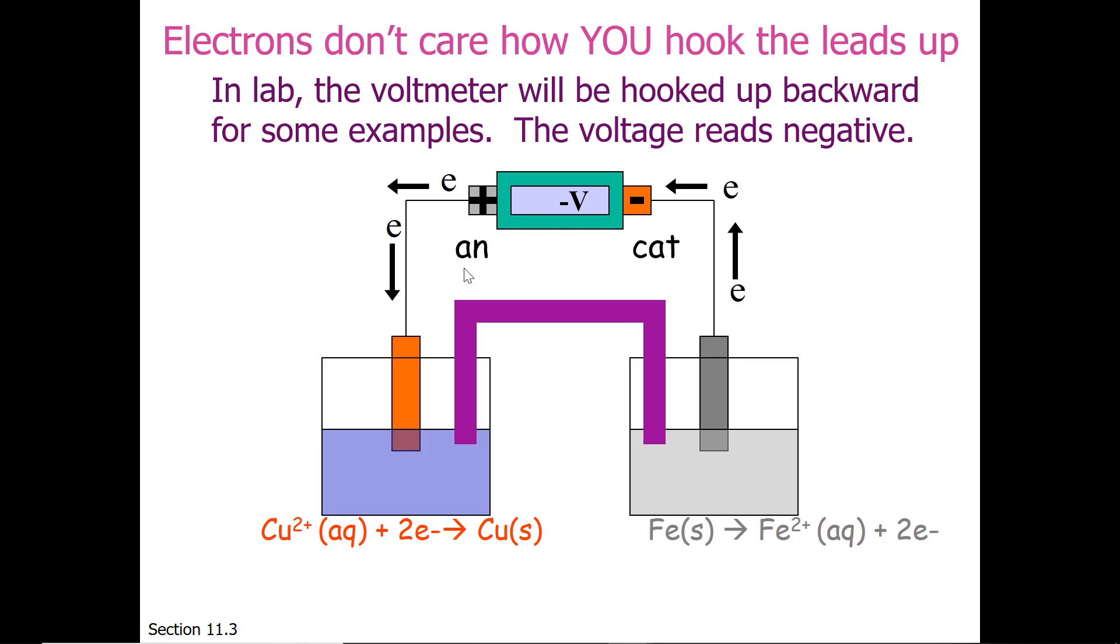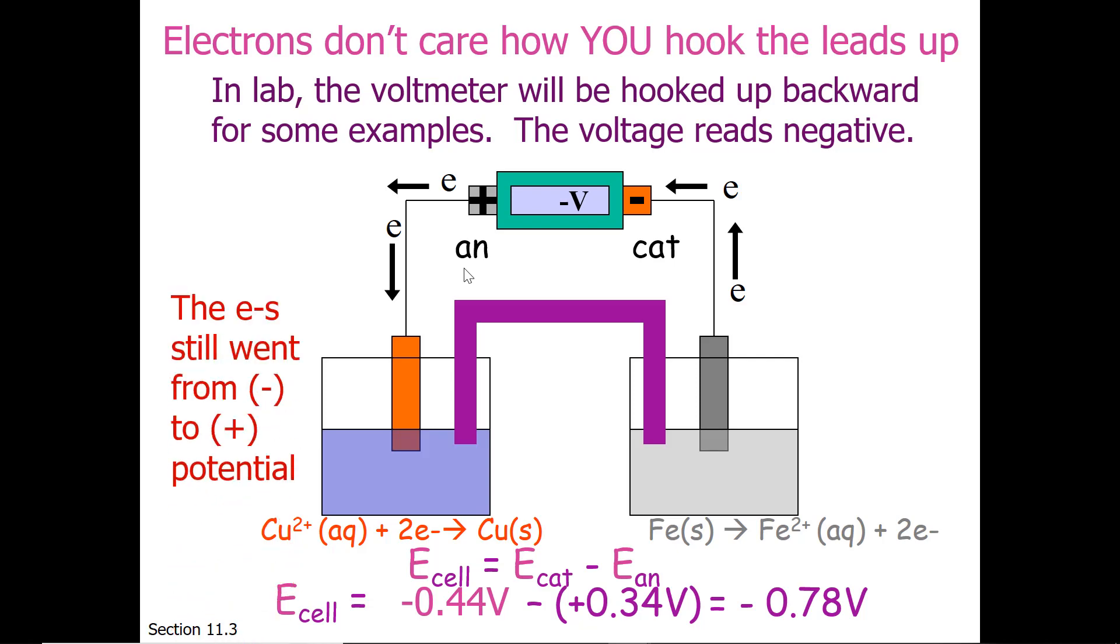The electrons don't care about that. They're always going to fall downhill. So instead of your E-cell being cathode minus anode, because you misidentified them, you will have as your cathode the more negative reduction potential, and as your anode the more positive reduction potential, which is reversed, and that's why the voltage is negative.